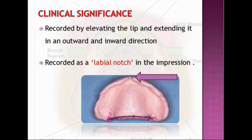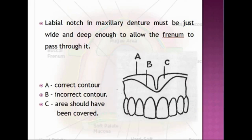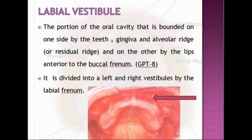Regarding clinical significance, the labial frenum is recorded by elevating the lip and extending it in an outward and inward direction. The corresponding denture landmark in the impression is a labial notch. The labial notch in the maxillary denture must be just wide and deep enough to allow the frenum to pass through it.